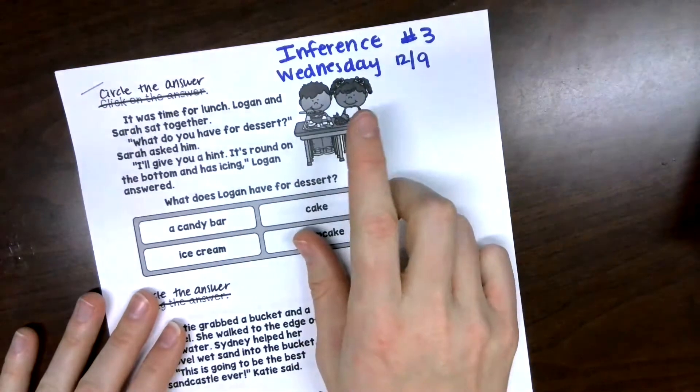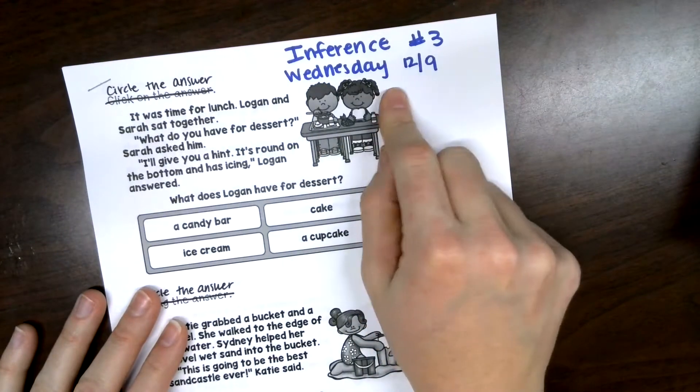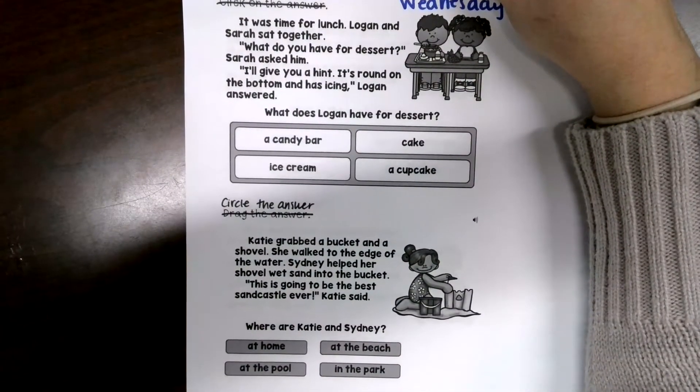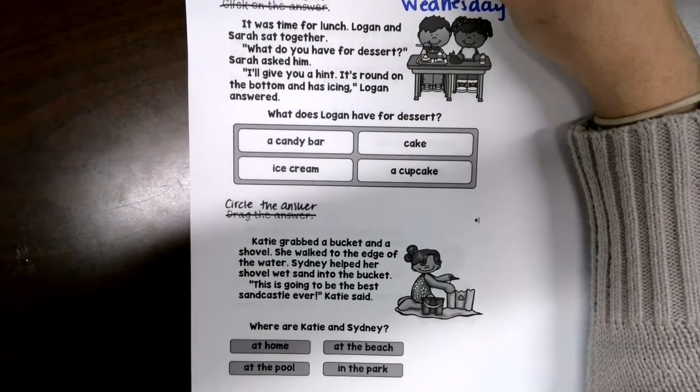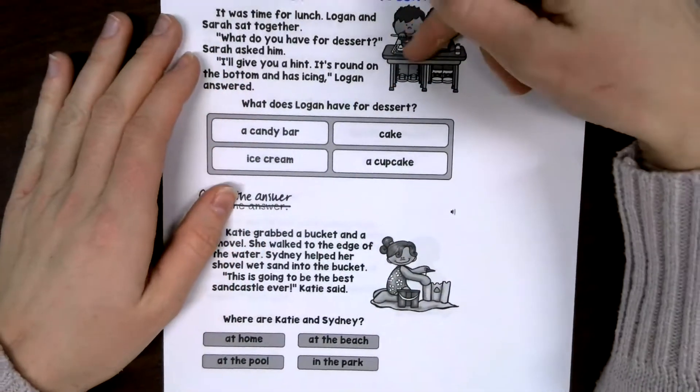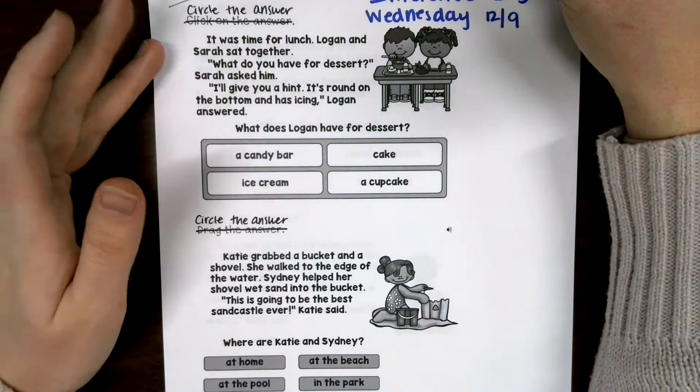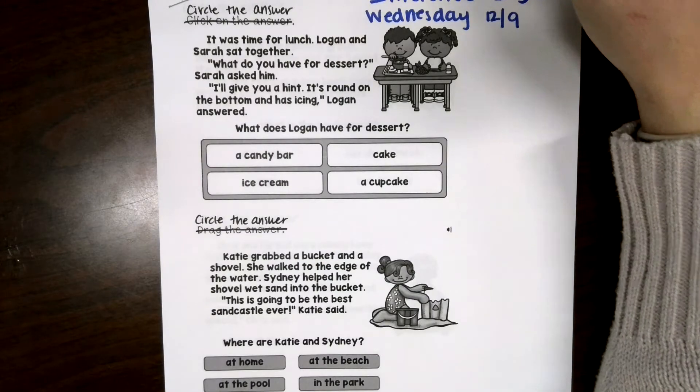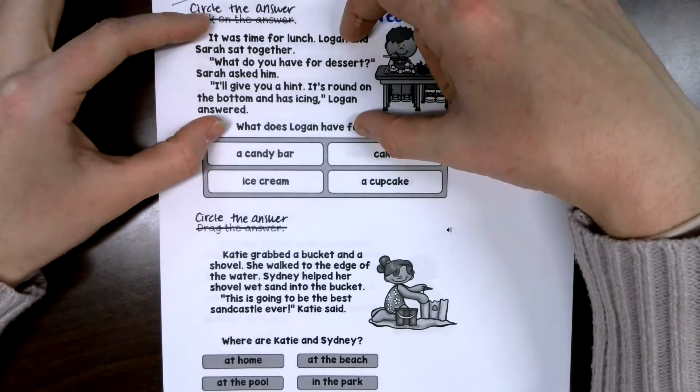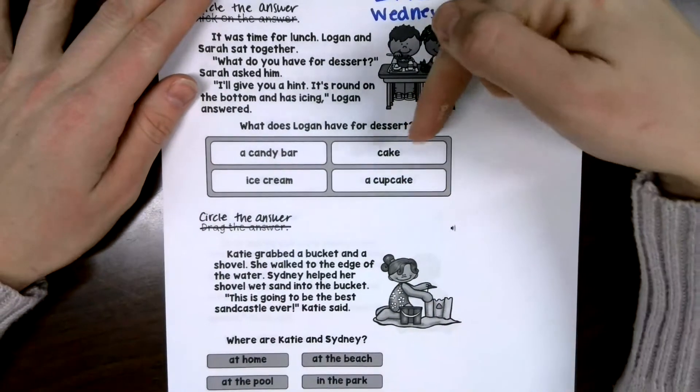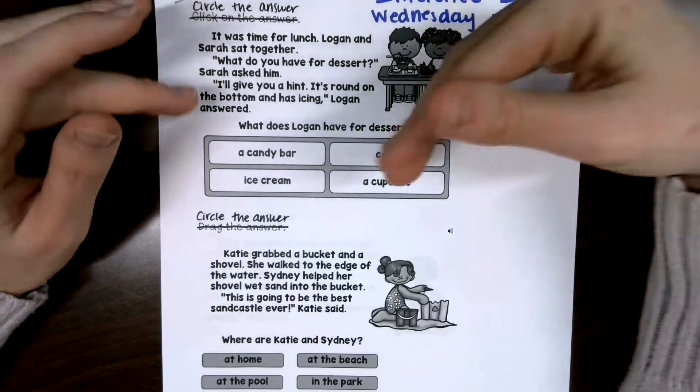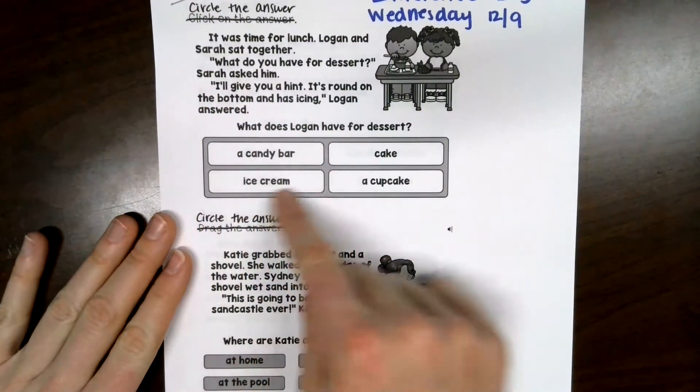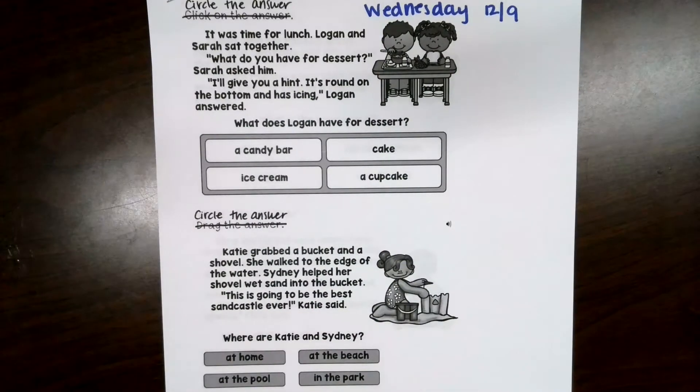After that, we have our inferences number three worksheet. So, inference number three, Wednesday 12-9. And we did one just like this yesterday, but this week we've done some like this. Now, remember, inferences is a prediction we can make from what we read. And it uses what we already know. So, you have all this information already in your brain from your life and what you've already learned. And then you're going to read a paragraph about something. And based on what you read, sometimes a picture, and what you already know, you can make a guess about how someone's feeling or what might happen next or what time of the year it is. So, for these, I'm going to read them. And then I want you to circle or color in the box that has the correct answer.